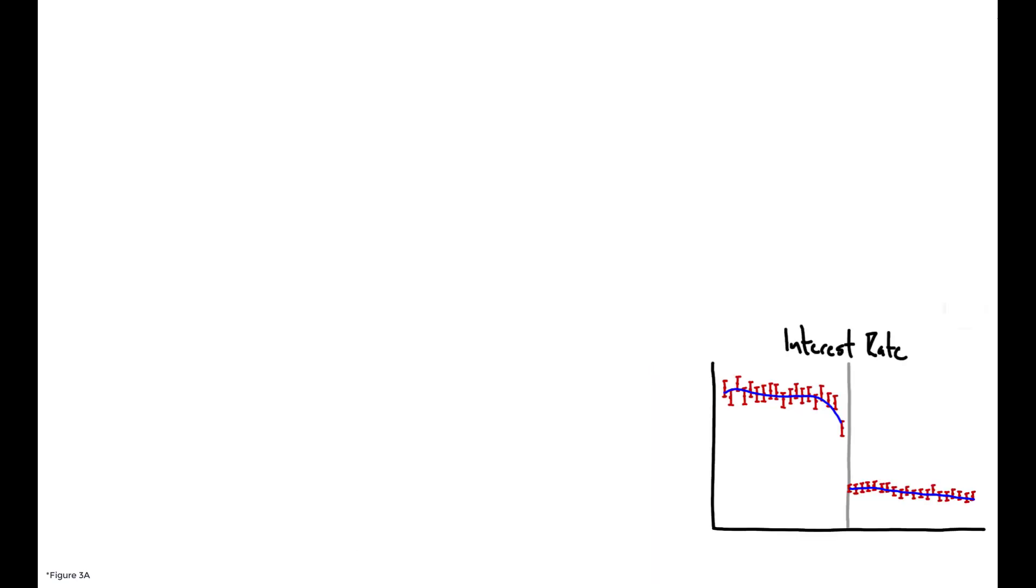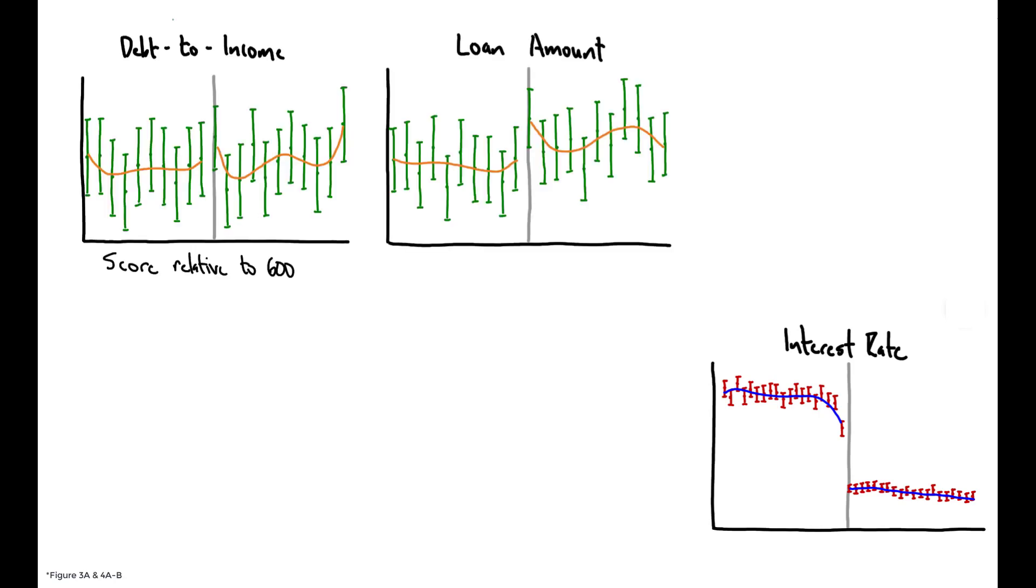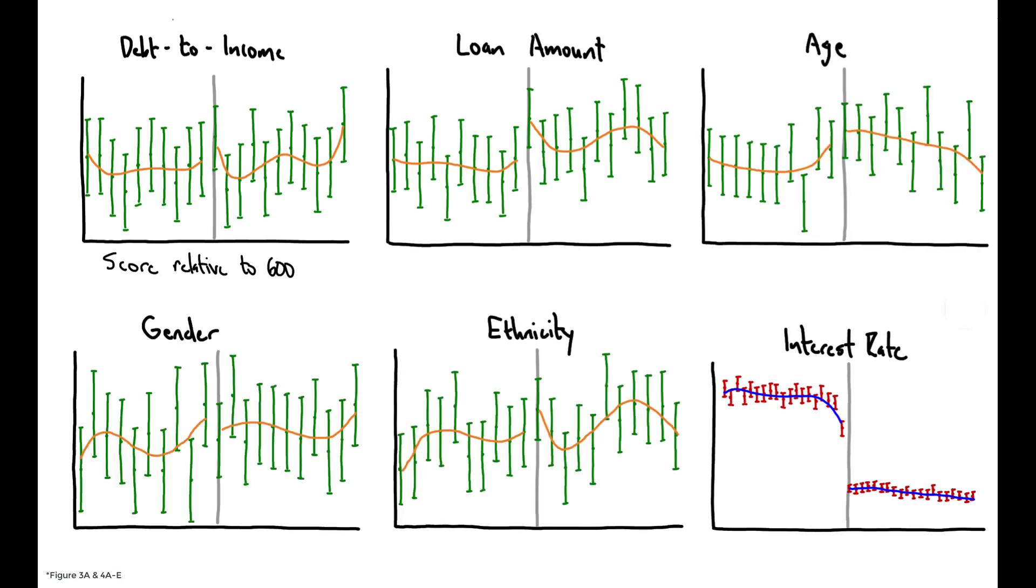borrowers just on either side of the 600-point cutoff receive significantly different interest rates. This is notable given that the kinds of characteristics that lenders typically look at in order to determine interest rates, including the debt-to-income ratio, loan amount, and applicant age, gender, and ethnicity, don't actually differ in any meaningful way on either side of the threshold.